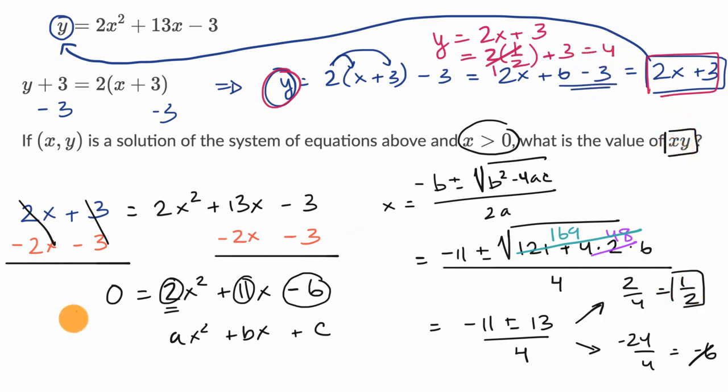We multiply the two. So xy is going to be equal to one half times four, which is going to be equal to two. And we are done.